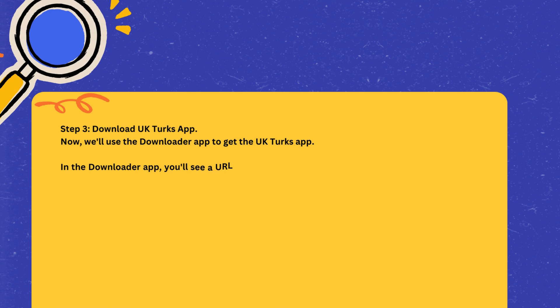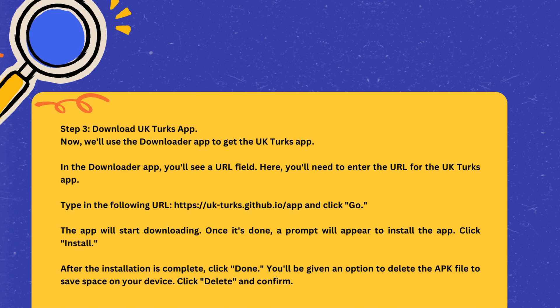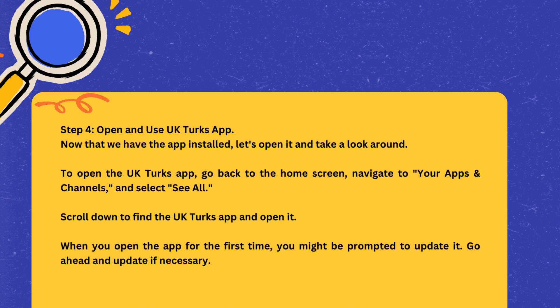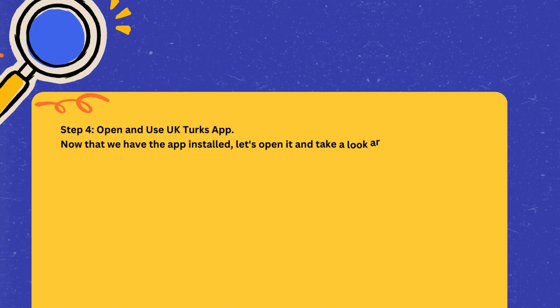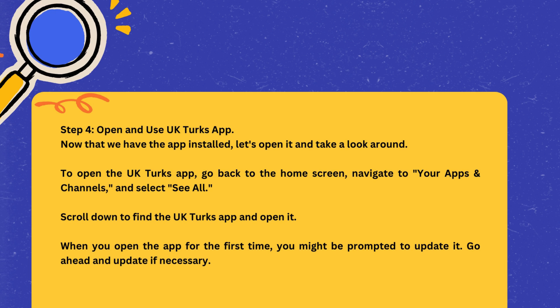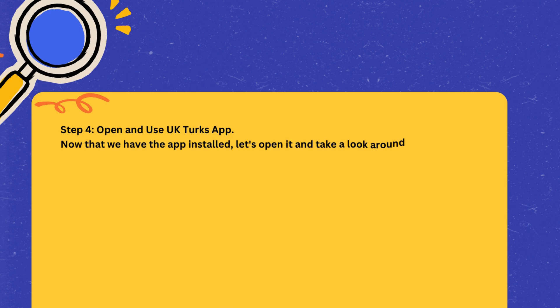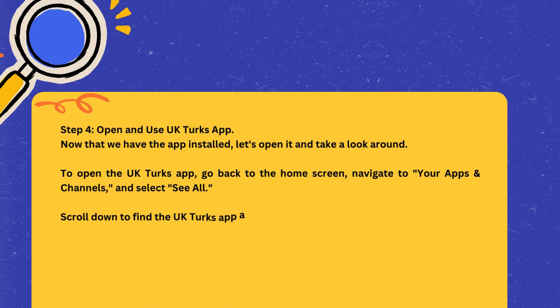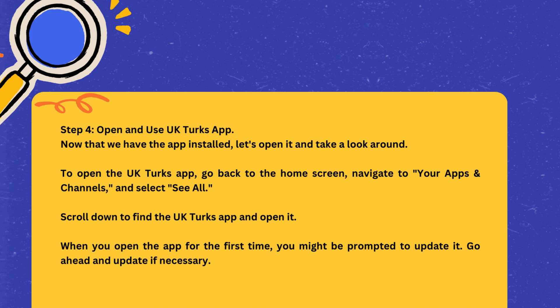You'll be given an option to delete the APK file to save space on your device. Click Delete and Confirm. Step 4: Open and use UK Turks app. Now that we have the app installed, let's open it and take a look around. To open the UK Turks app, go back to the home screen, navigate to Your Apps and Channels, and select See All. Scroll down to find the UK Turks app and open it. When you open the app for the first time, you might be prompted to update it. Go ahead and update if necessary.